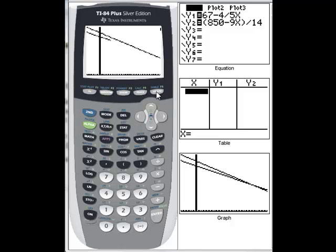There's one. There's two. And it looks like we have found our intersection. We have it in the window.